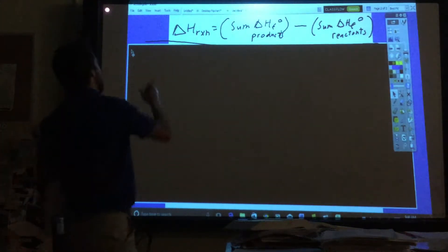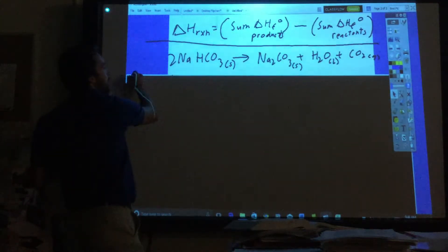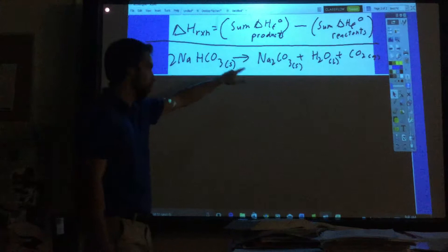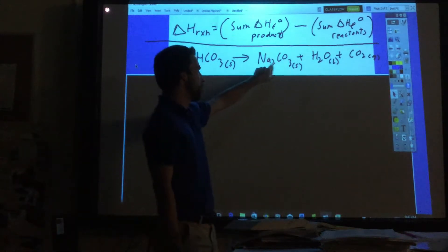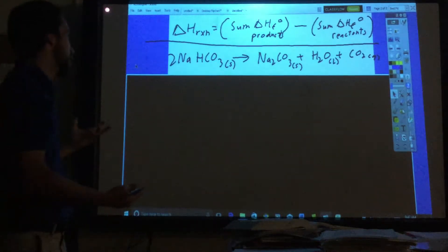If I have this - this is the problem: 2 NaHCO3 solid going to sodium carbonate plus water plus carbon dioxide. That's given. We want to know what is the Delta H for this equation.